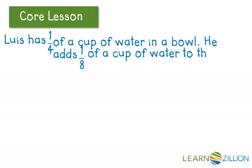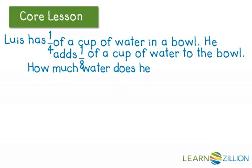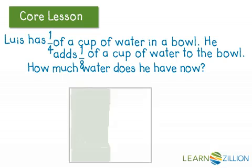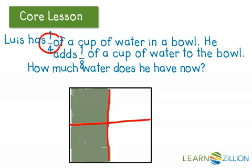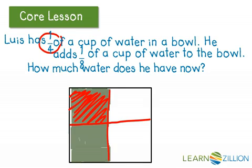Luis has one fourth of a cup of water in a bowl. He adds one eighth of a cup of water to the bowl. How much water does he have now? Again, we're going to think about what one half looks like. We're going to pull out our larger fraction first when we're adding, because that helps us get as close to one half as possible. So that would be one fourth. We think about what one fourth would look like on that model — it's still less than one half. So right now we're thinking it's going to be less than one half.